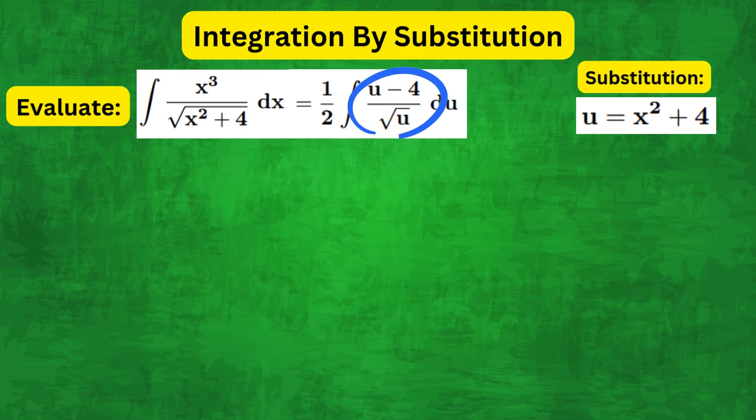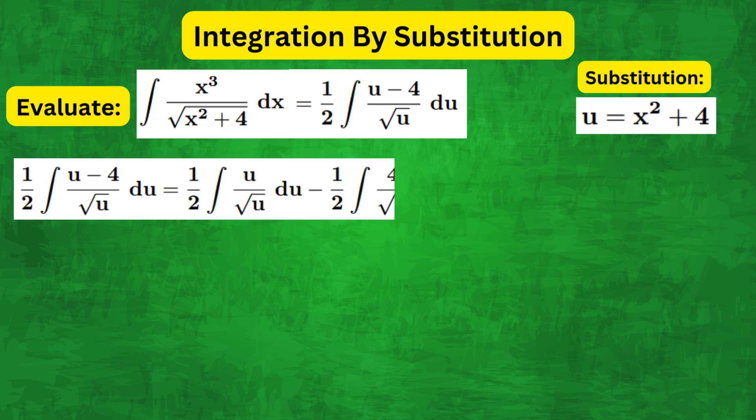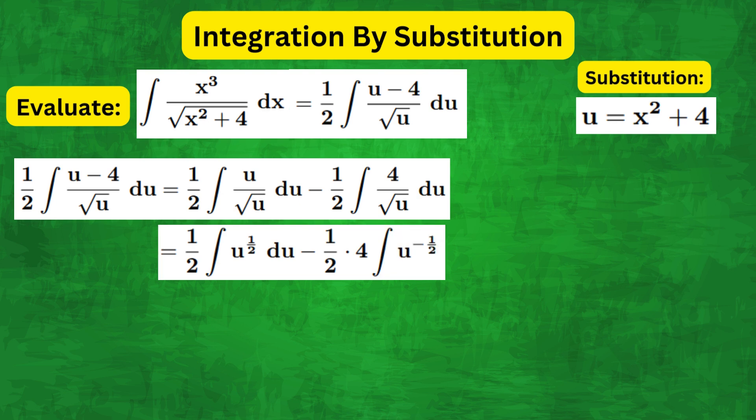The next step is to simplify the integral. We can split the fraction as 1 over 2 integral of u over square root of u du minus 1 over 2 integral of 4 over root u du. Simplifying both terms, we can rewrite the integral as a half integral of u to the half du minus a half times 4 integral of u to the minus a half du.